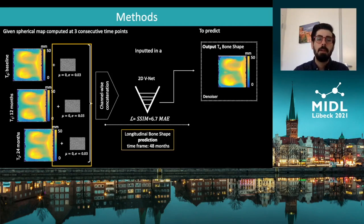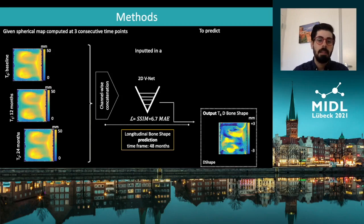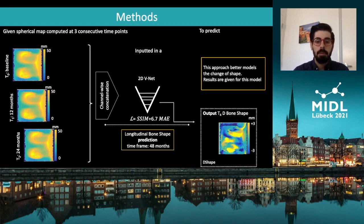Ultimately, we designed a third approach in which we task our model to directly predict the change in shape over 48 months — we call this model Delta Shape. In practice, this approach works better than the others, so I will focus the analysis on this approach.